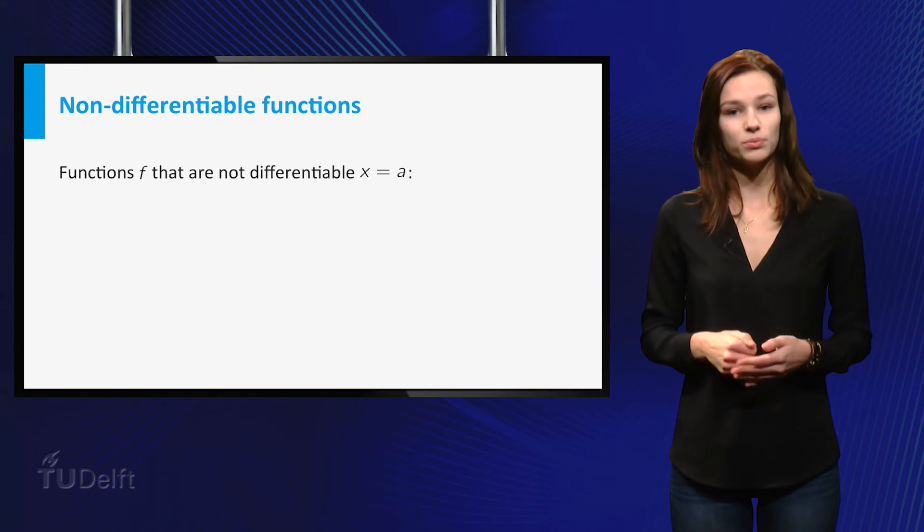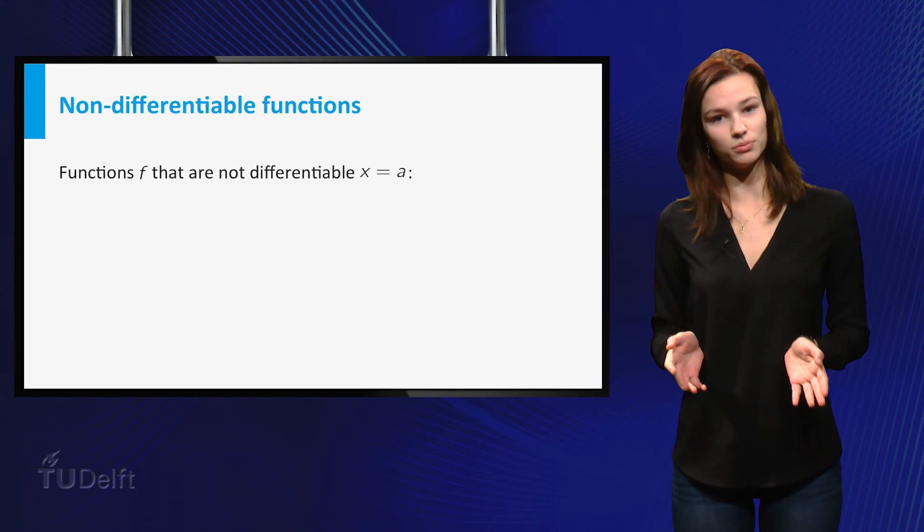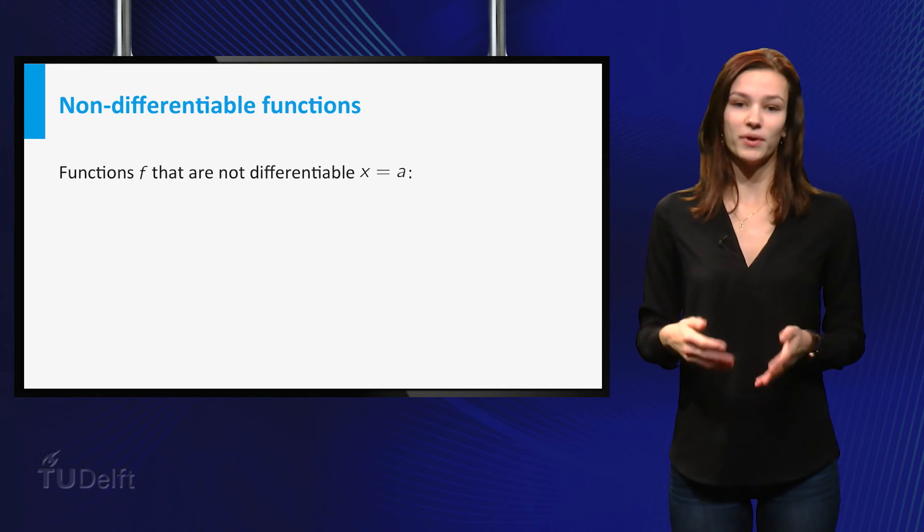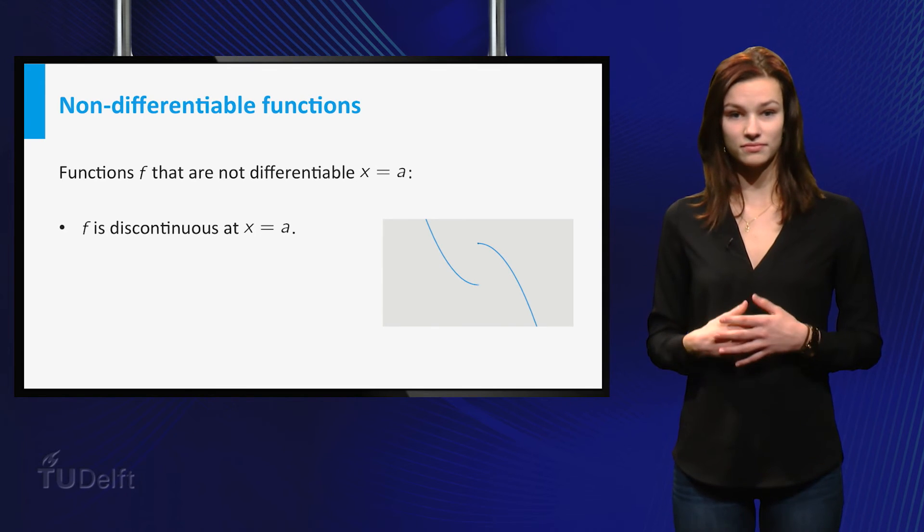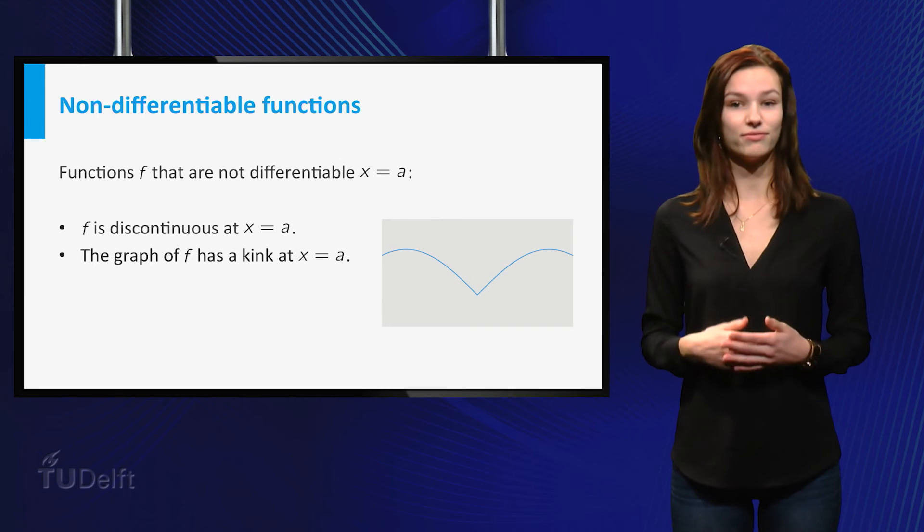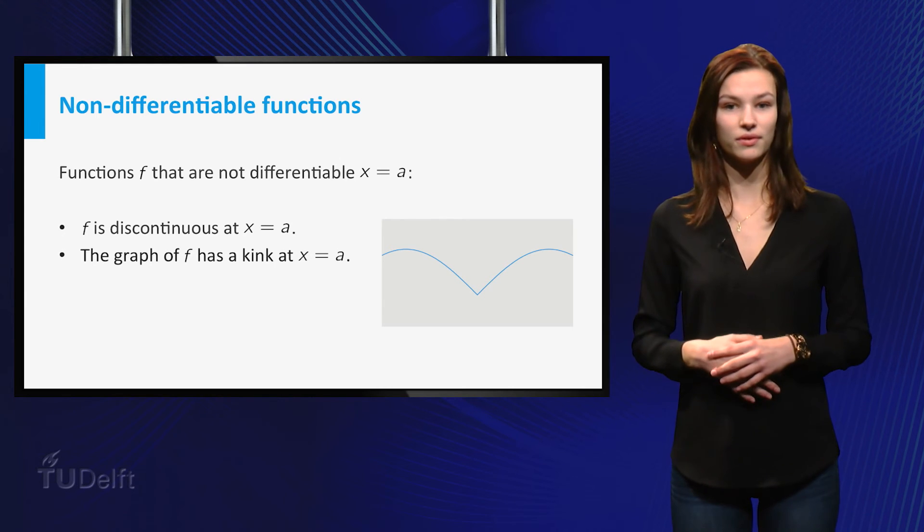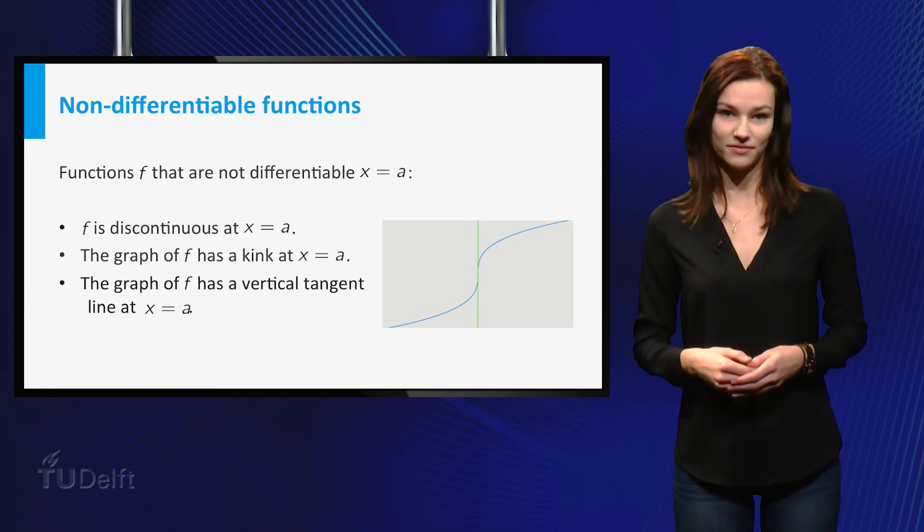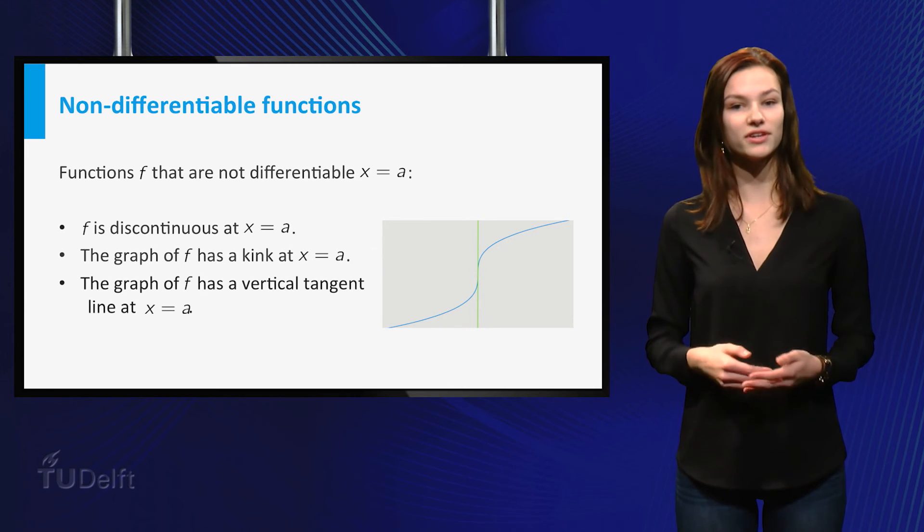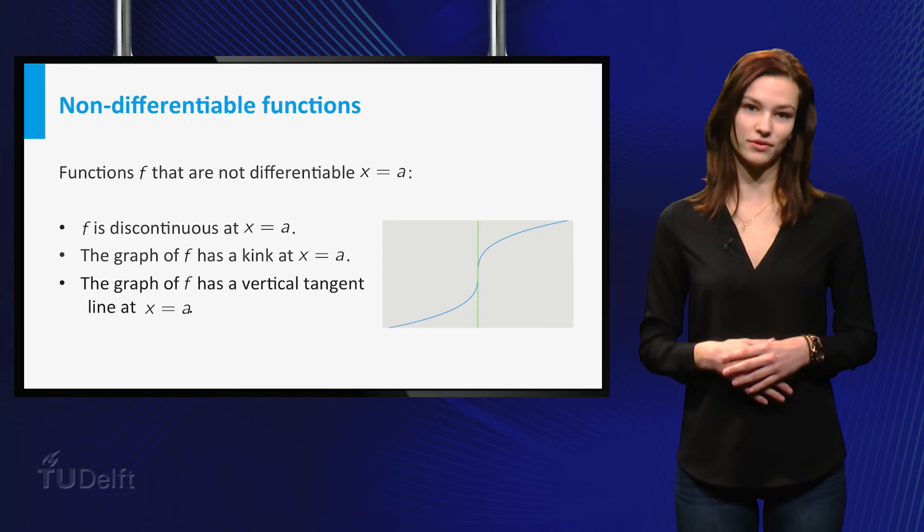Some examples of instances where a function f is not differentiable at a occur when f is not continuous at a, the graph of f has a kink at a, or the graph of f has a vertical tangent line at a. There are even more exotic examples, but you will not encounter those often.